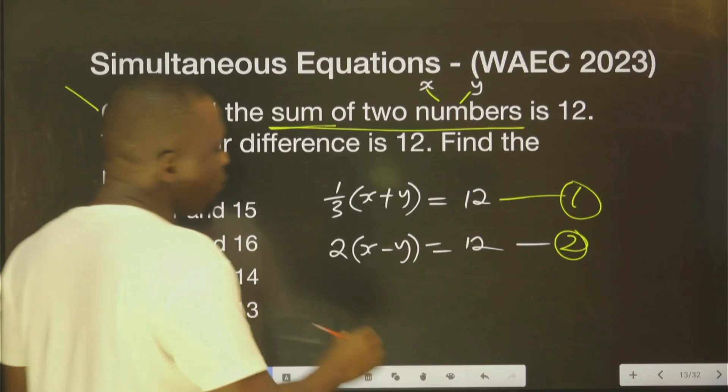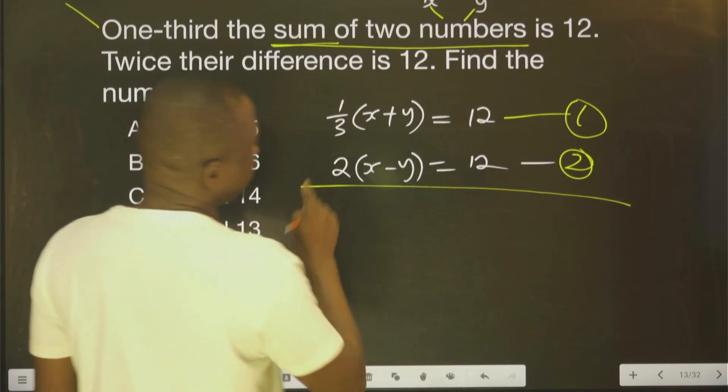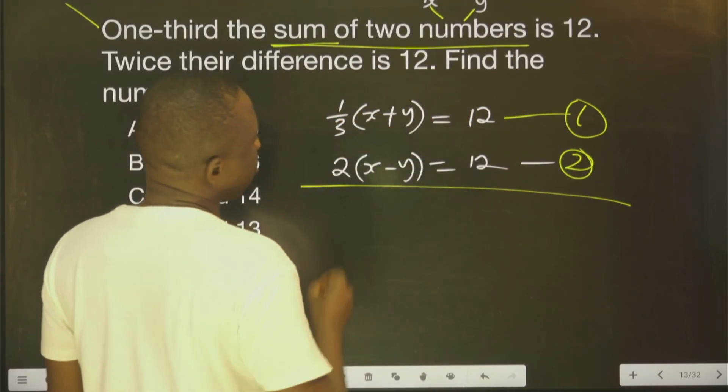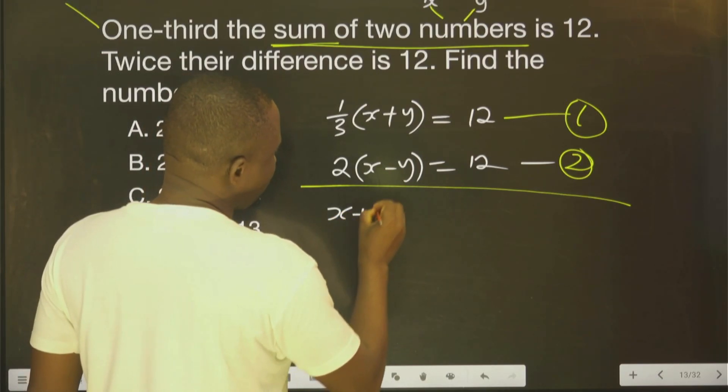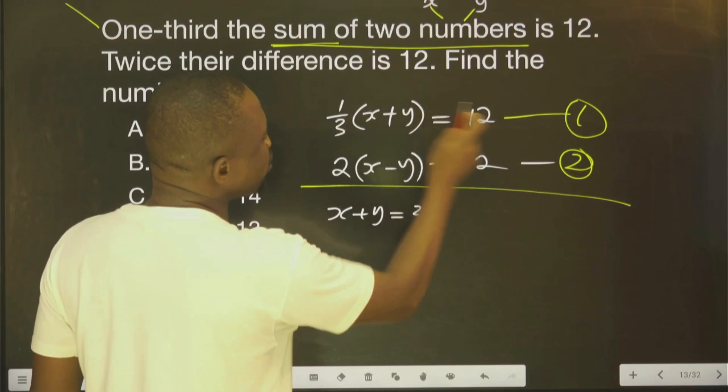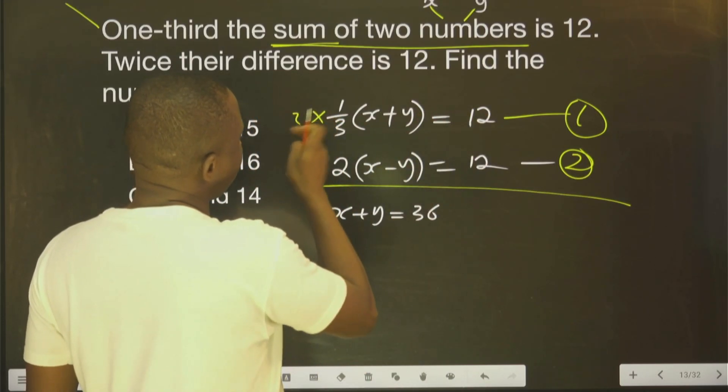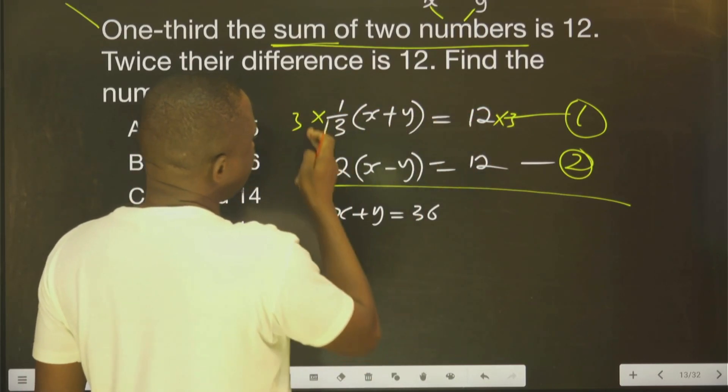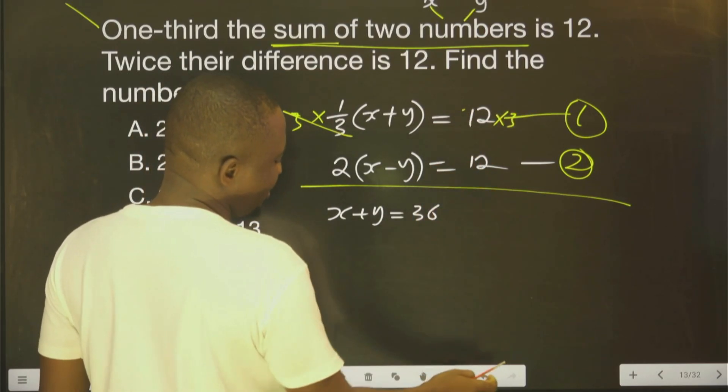You agree with me that if we work on this first equation, you will agree with me it's S plus Y equals 36. That is multiply both sides by 3. This will cancel this. This multiply, you have this.